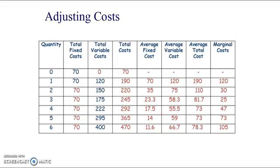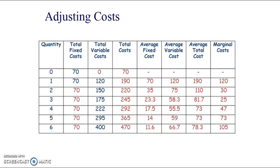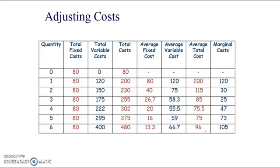What happens when we adjust costs? I'll start with fixed costs and increase total fixed costs by 10. Everything in total fixed costs increases by 10 all along. This has an impact on total costs — everything there also increases by 10. Average fixed costs adjust because we're dividing the new higher fixed cost by the same quantities. Average total cost changes too. But there is no impact on marginal costs.